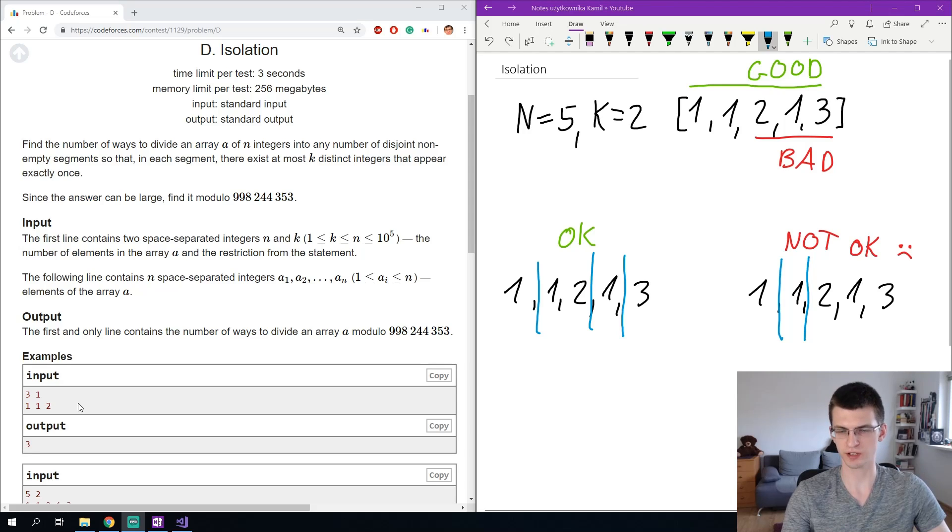On the top right you can see the second sample from the problem. Length 5, k equal to 2 and the sequence itself. A segment containing all the numbers would be good because the unique numbers are 2 and 3, the number of them doesn't exceed k, while a shorter segment 2 and 3 would be bad because all three numbers are unique, they don't appear more than once here and the number of them exceeds k.